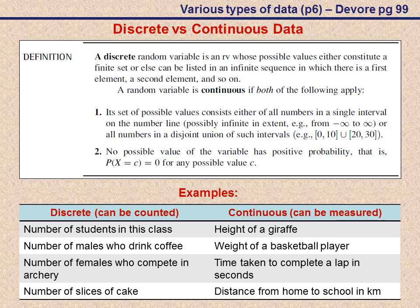The number of slices of cake is a more interesting variable. We can go and count our slices of cake, one, two, three, four, five, or we can have half slices or quarter slices.